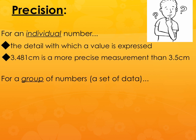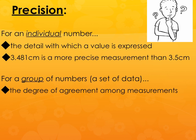If we're looking at a group of numbers or a data set, what you're looking for in terms of precision isn't how many decimal places they have. What you're looking for is the degree of agreement among measurements — how close are they to each other? Are they consistent?